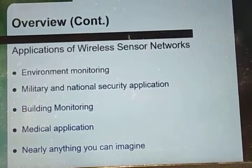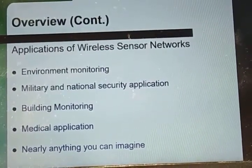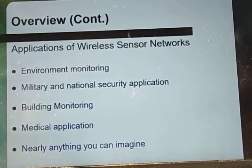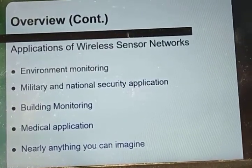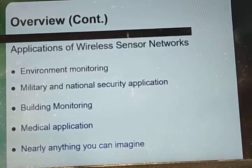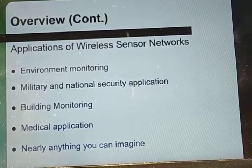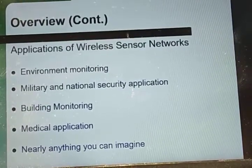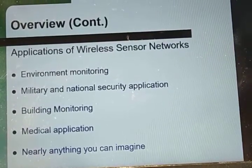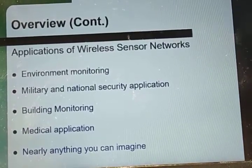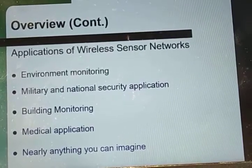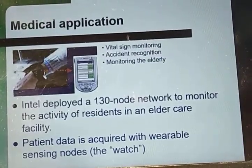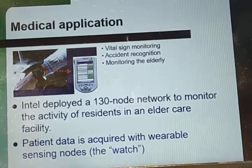For building monitoring, wireless sensor networks can be used in large buildings or factories to monitor climate changes. Thermostats and temperature sensor nodes are deployed all over the building area. In addition, sensors can be used to monitor vibrations that could damage the structure of a building.